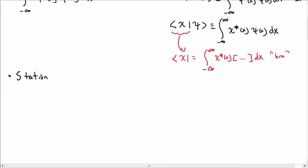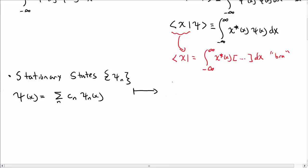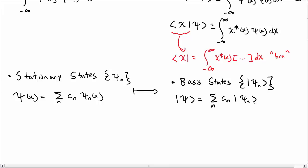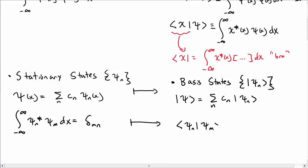Another central idea in quantum mechanics is the idea of stationary states — a set of states or functions psi sub n. You can expand any wave function into a set of stationary wave functions. We're going to call these a set of basis states ket psi sub n, and then expand a generic ket in terms of coefficients on the basis states. Stationary states are normalized and orthogonal, so the inner product between psi n and psi m gives us delta mn — we call that orthonormality.